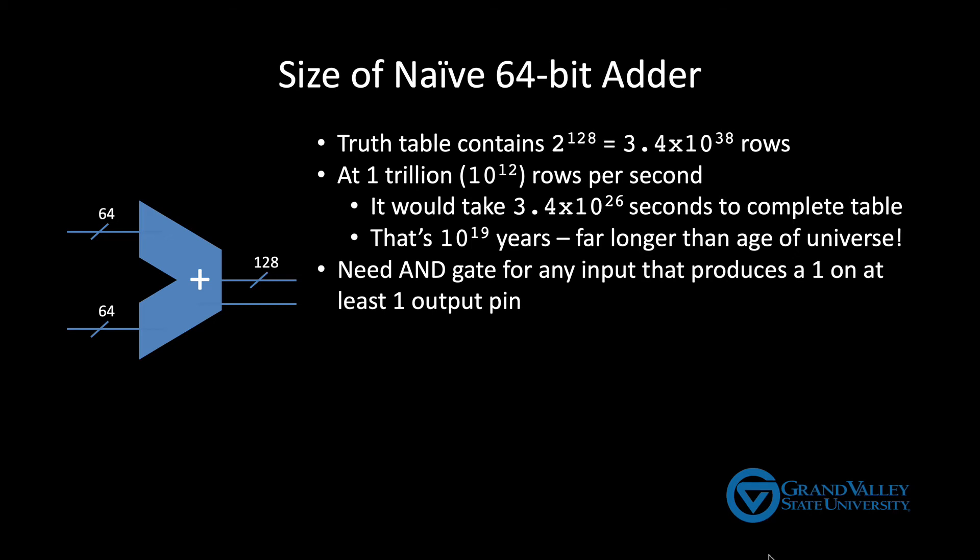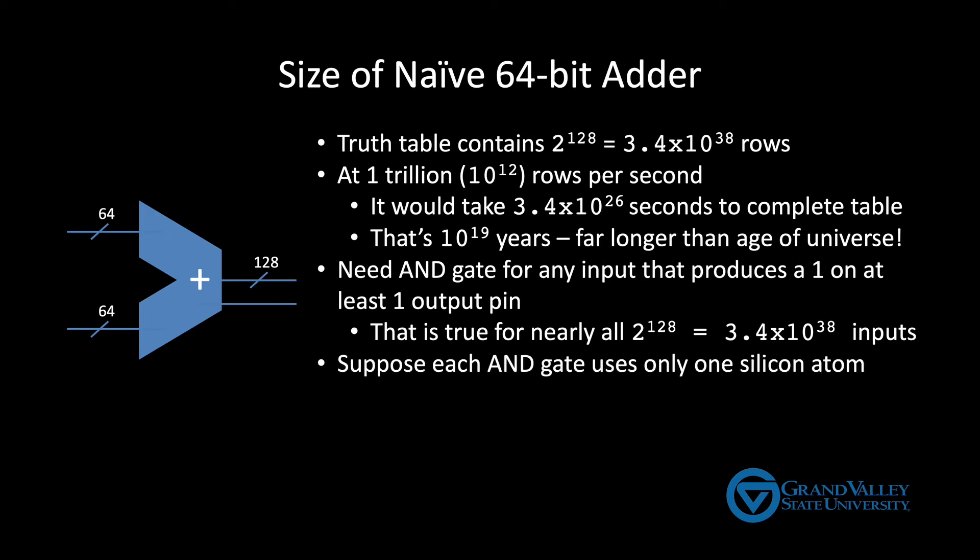So it's reasonable to estimate that there are 2 to the 128th AND gates. Now if we again make a ridiculously conservative estimate and assume that we can build each of these 2 to the 128 AND gates out of a single atom of silicon, which of course we would need more than that in real life, but if we only had a single atom of silicon per AND gate, this circuit would weigh 6.7 trillion kilograms.